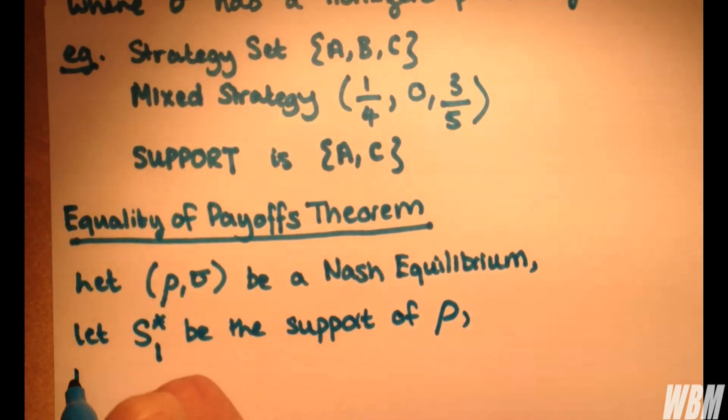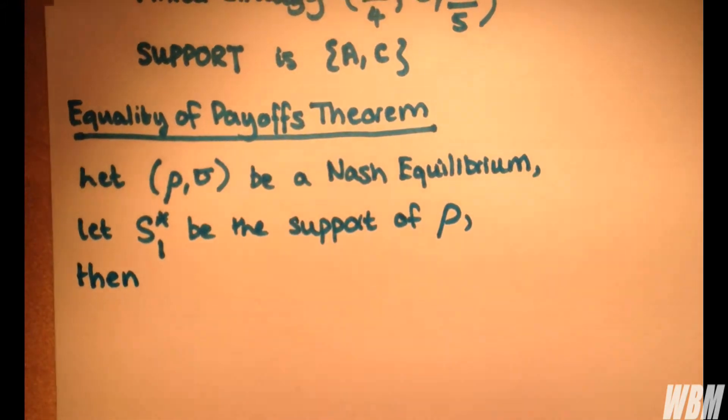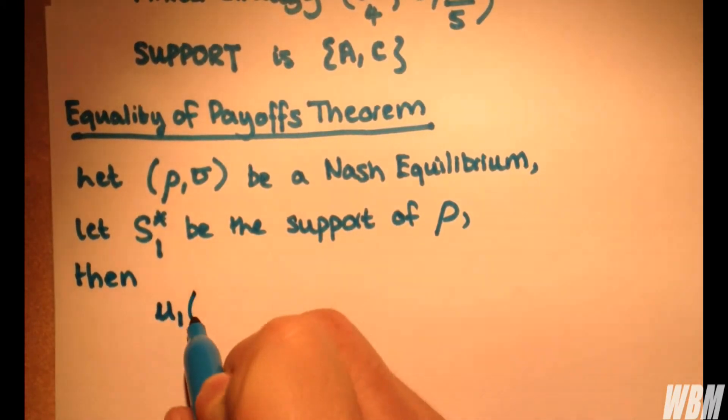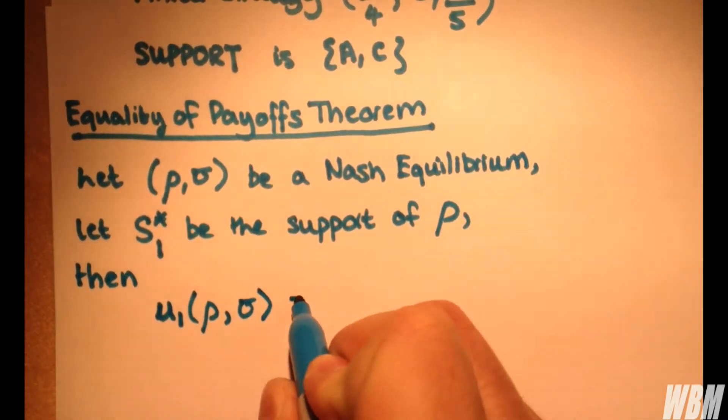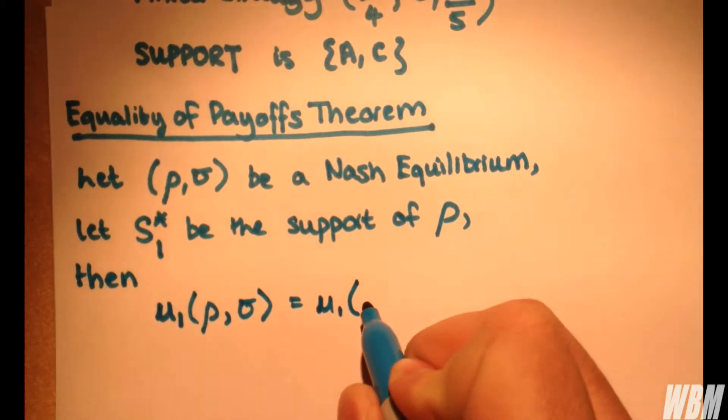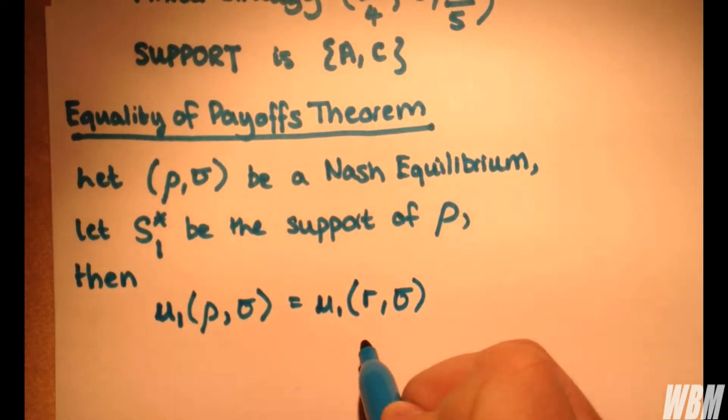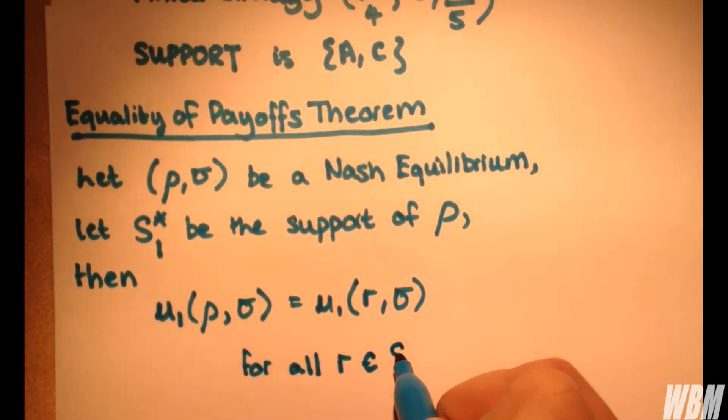Then we have the following outcome. Then the utility u₁(ρ, σ) is equal to the utility u₁(r, σ) for all r in the support set for ρ.